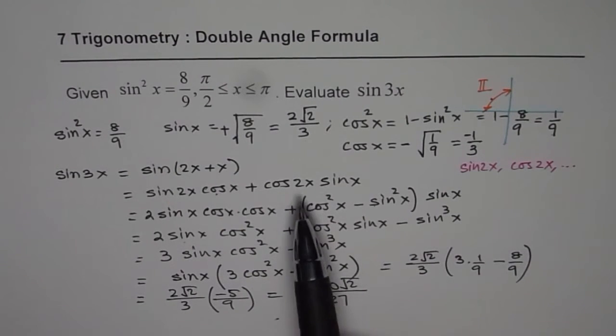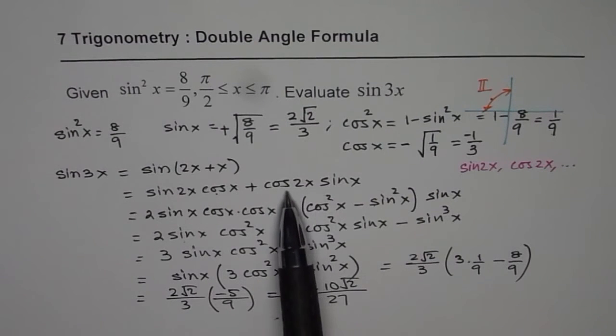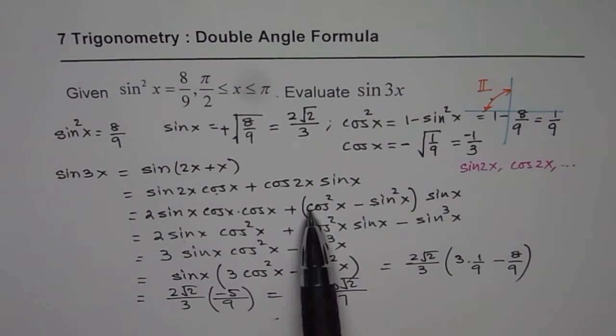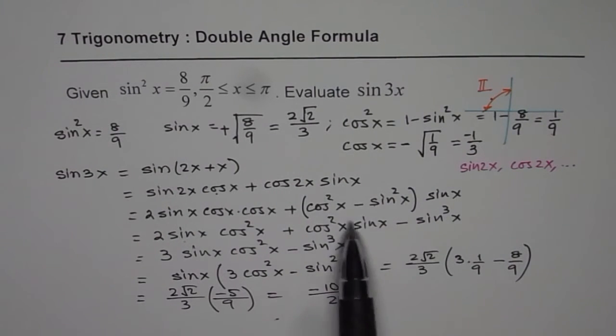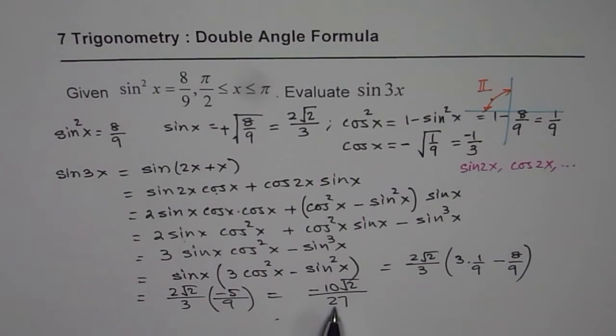Well, at this stage, what we could have done is that we could actually write cos 2x in terms of 1 - 2 sin²x and then also we could have done it. But anyway, either way you do, you are going to get this as your answer.